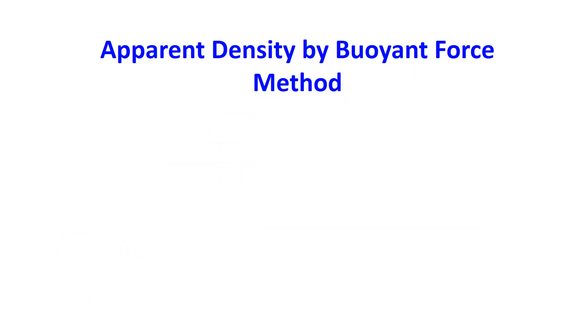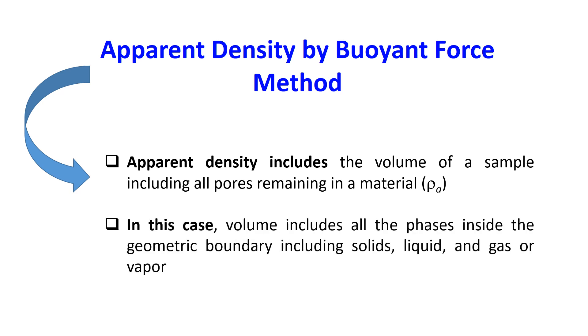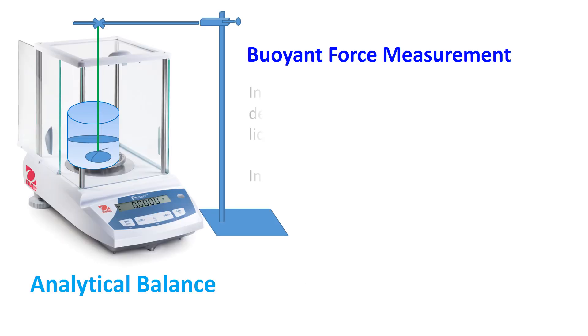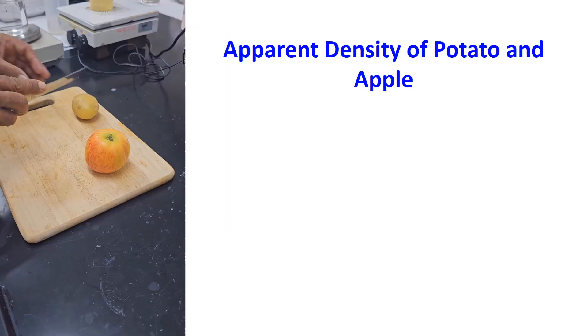In my earlier video I have clearly explained different types of density. In this video we are going to explain the measurement of apparent density by buoyancy force method. Apparent density includes the volume of a sample including all pores remaining in a material. Volume includes all the phases inside the geometric boundary including solids, liquids, and gas or vapor. Apparent density is calculated as mass divided by the total volume of a sample. Buoyancy force can be determined from the sample mass in submerged liquid. In this experiment we will use distilled water.